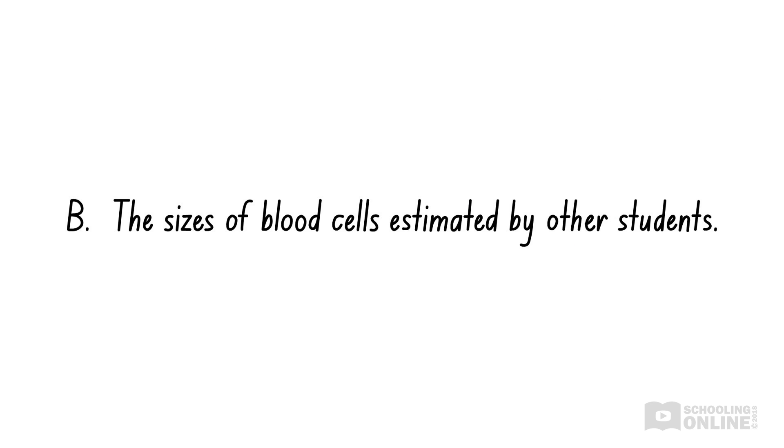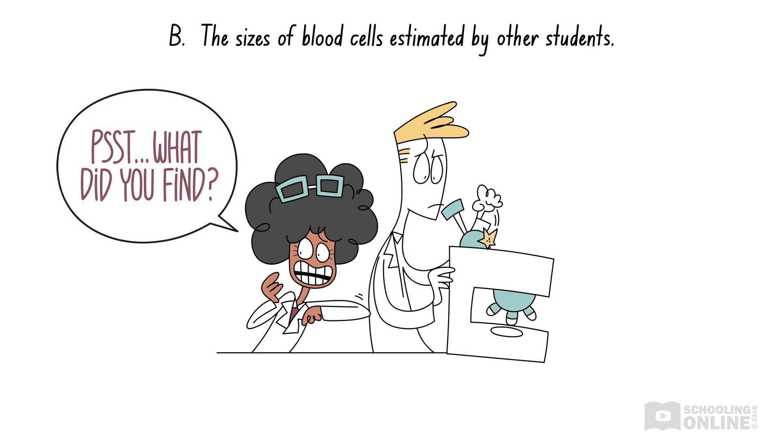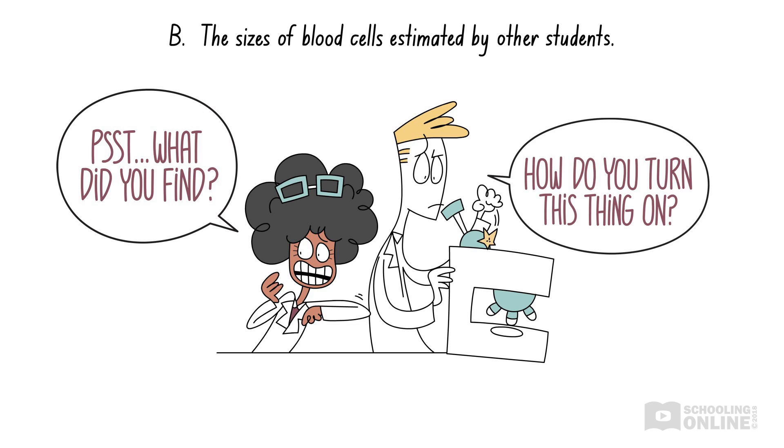Option B involves comparing Donna's results with those of other students. This is important to ensure that her results are relatively consistent with the findings of other students. However, this is an element of reliability rather than accuracy. Remember, accuracy is about how the equipment is used and how the experiment is performed. On the other hand, reliability refers to repeating experiments and obtaining similar results each time. We'll discuss this in our upcoming videos on reliability. In this way, the experiments of other students can be thought of as repetitions of Donna's experiment. As we can see, option B is also incorrect.